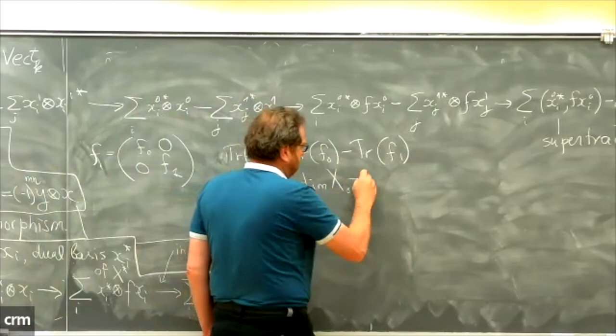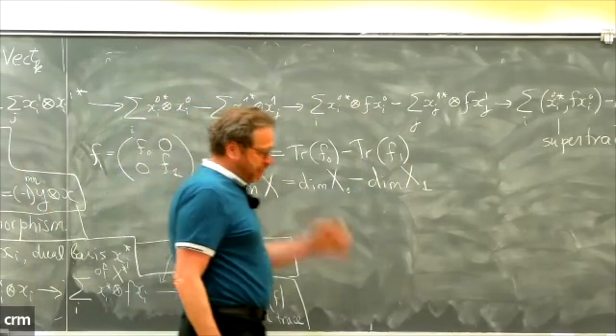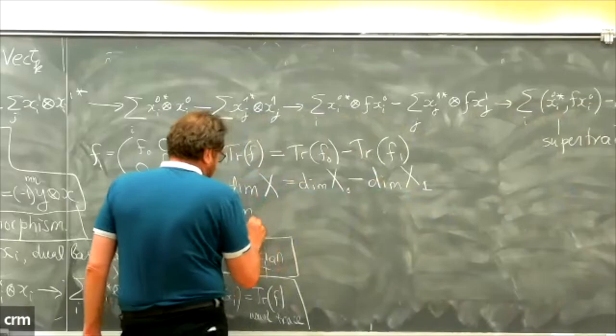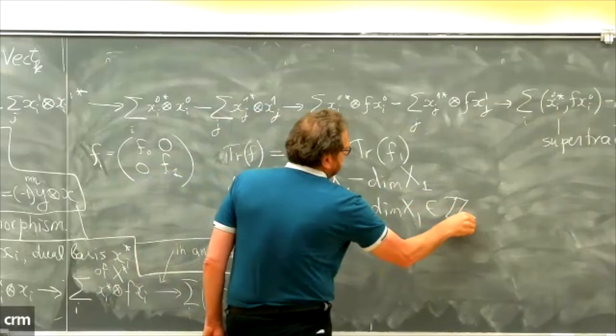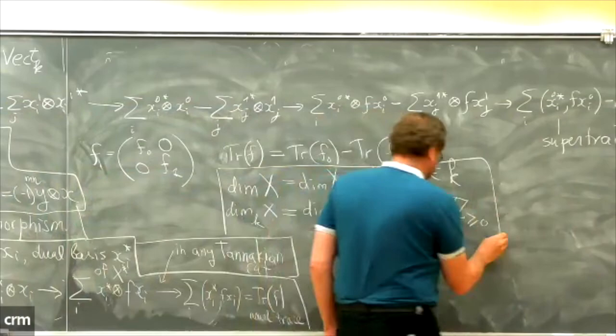This is the supertrace. If f = (f₀, f₁) preserving parity, then the supertrace of f equals trace(f₀) − trace(f₁). In particular, the categorical dimension of x equals dim(x₀) − dim(x₁). The usual k-dimension is dim(x₀) + dim(x₁) ≥ 0, but the categorical super-dimension belongs to k. In characteristic zero, if c is Tannakian then the dimension of every object is a non-negative integer.